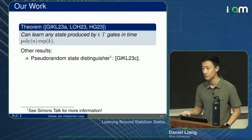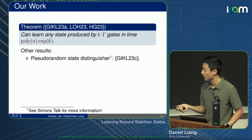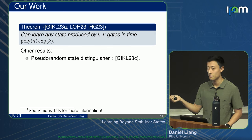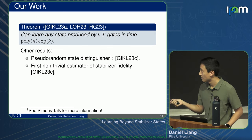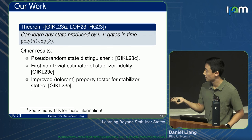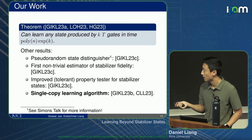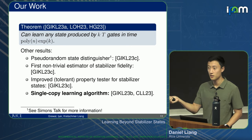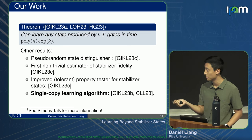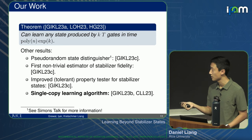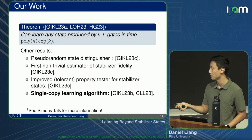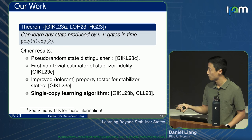Some other results we have: pseudorandom state distinguishers — there's a cool Simons talk about that by my co-author Will — results involving stabilizer fidelity and property testing, and a follow-up where we use single copies only. We got a slower, less sample-efficient algorithm using only single copies, but it's pretty involved.